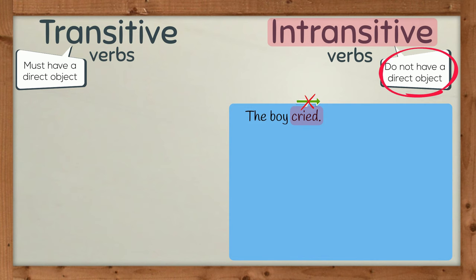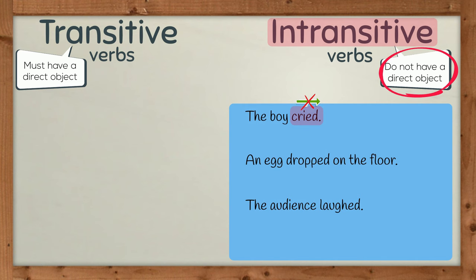Here are some more examples. An egg dropped on the floor. The audience laughed. Mr. Smith sneezed loudly. In these sentences, there is no direct object. The action is not passed on. These verbs are intransitive.